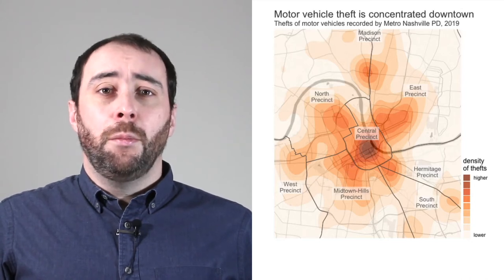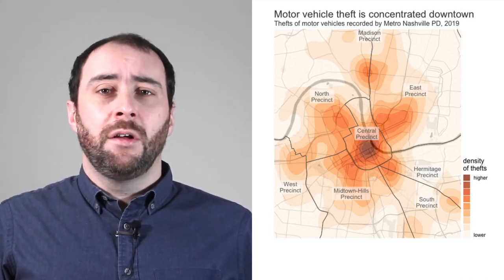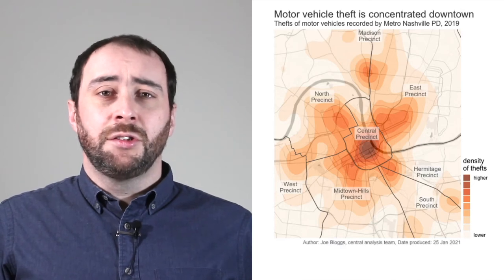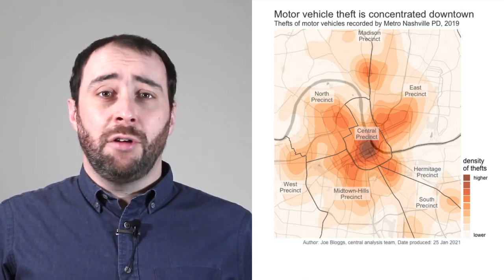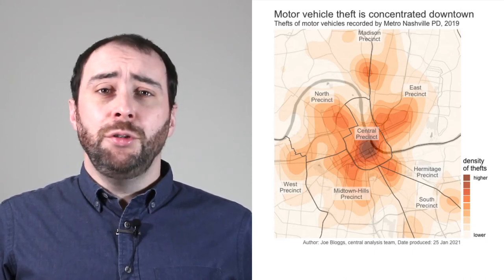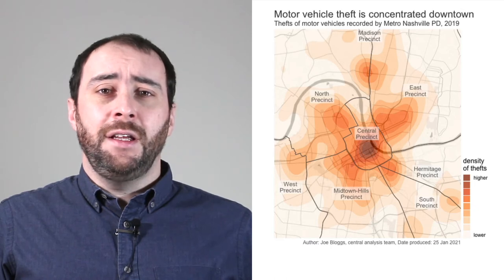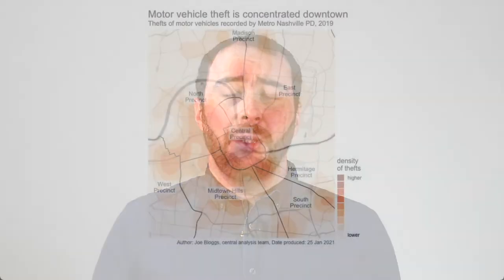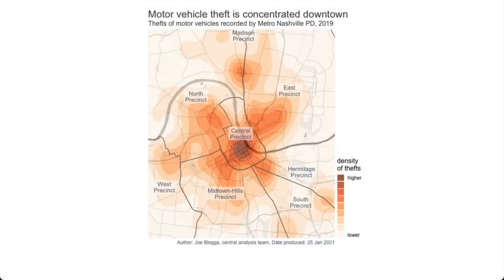Next, much lower down the visual hierarchy at the bottom of the map, right-aligned, in much smaller and lighter grey text, I'm going to add information about who wrote the map and the date on which it was produced. The map author is important because, just like knowing the author of a textbook or report, it's useful to know who produced a map so you can assess how reliable it's likely to be. The date is useful because it helps people understand how up to date the map is.